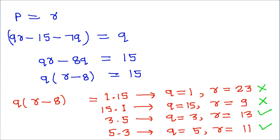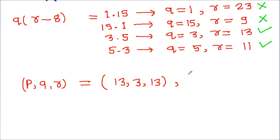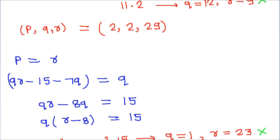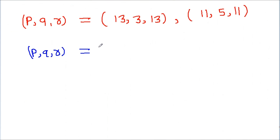So in the second case, since p = r, we get (p, q, r) = (13, 3, 13) and (p, q, r) = (11, 5, 11). Thus, the complete set of solutions is: (p, q, r) = (2, 2, 29) from the first case, and (13, 3, 13) and (11, 5, 11) from the second case.